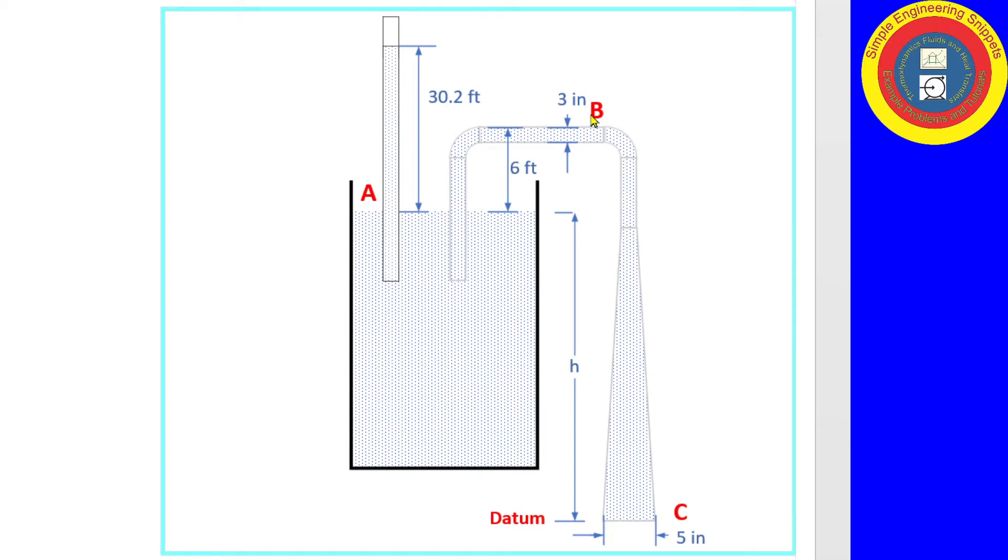Another location, Bravo, I've put at the highest point in the siphon. This makes sense because the basis of this problem is to find the height of the water, h, that results in cavitation in the siphon. And the highest point is going to be the point where we reach the vapor pressure first.